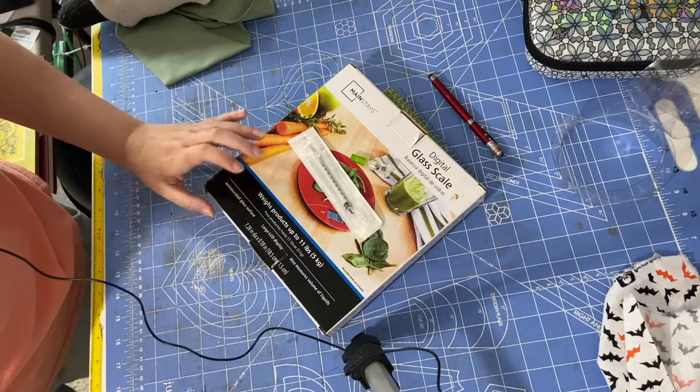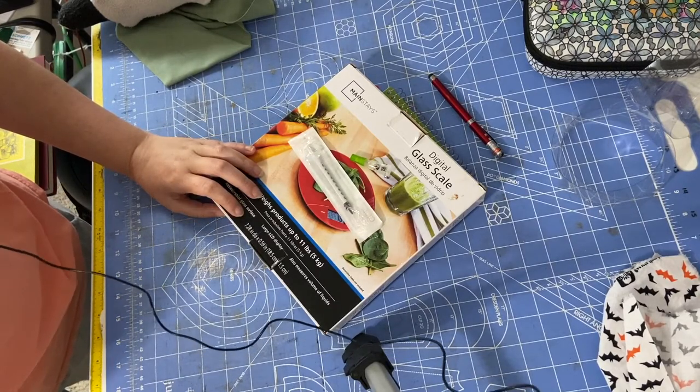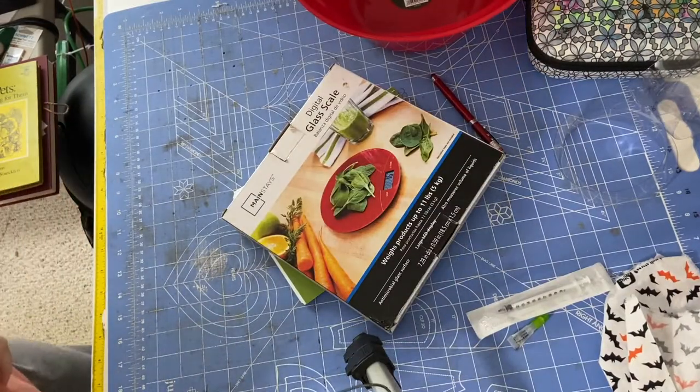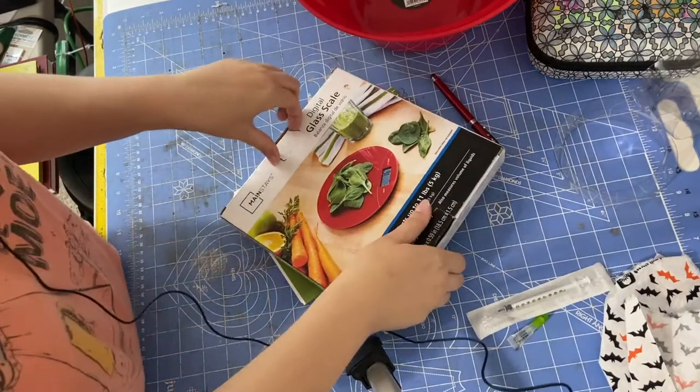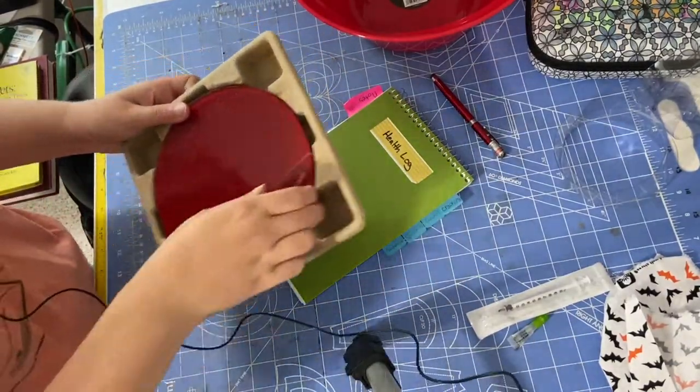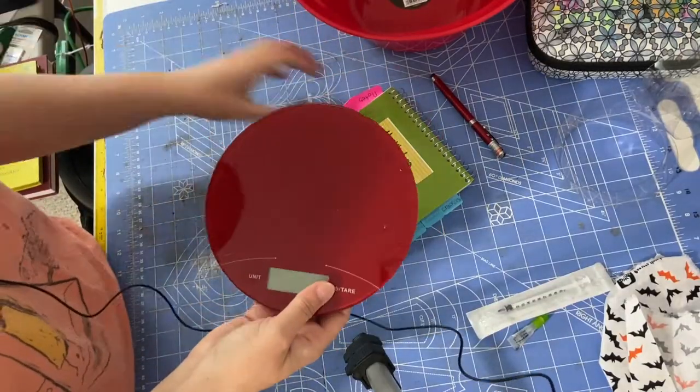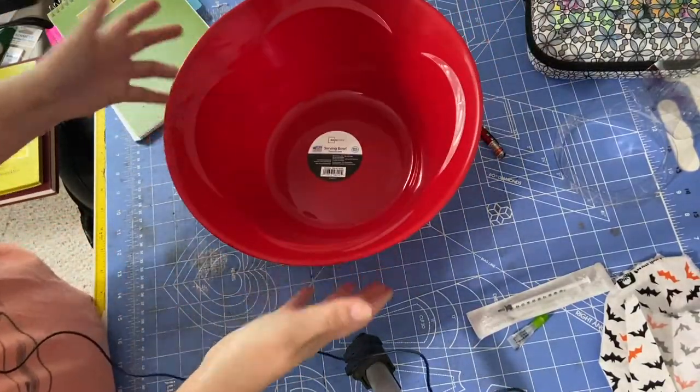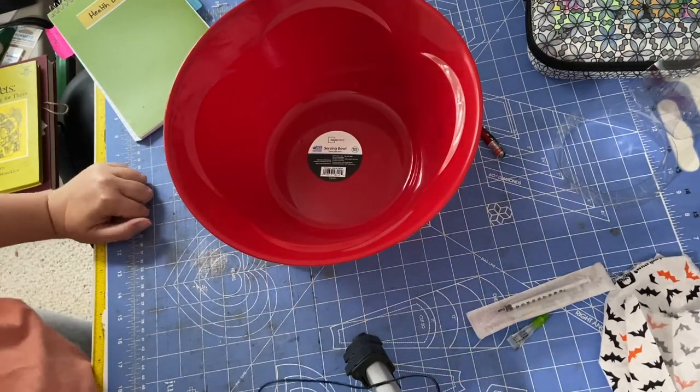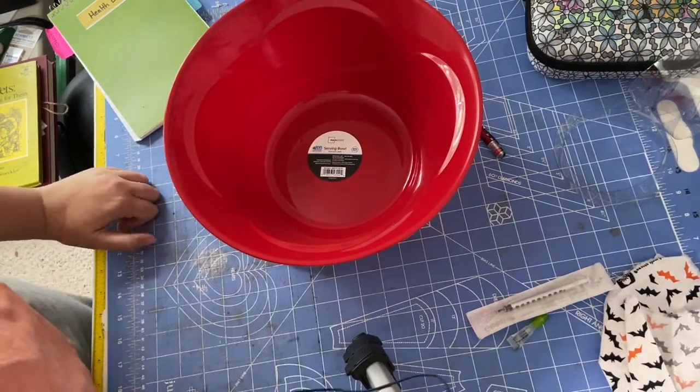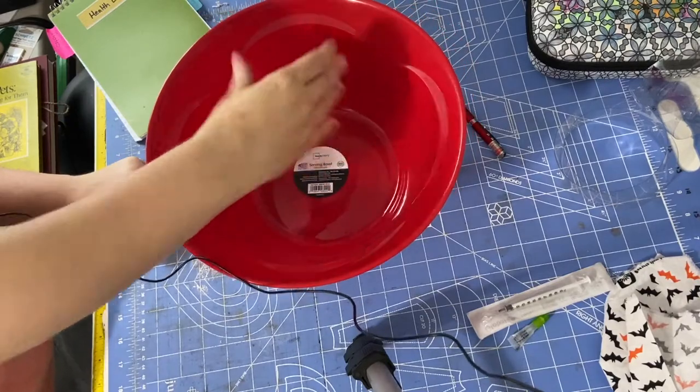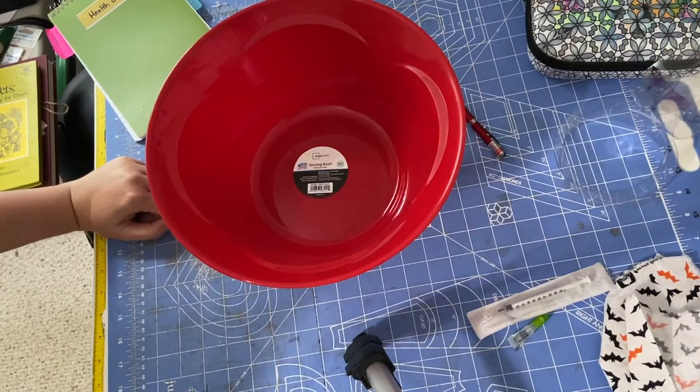Oh and I need something to set on the scale so that the rats can sit in it. Let me go grab that. I'm honestly not sure what's going to be the best to put on this scale so I grabbed a serving bowl that I have. I'm afraid that when I set this on here I won't be able to see it well. I can see it but you guys won't be able to see how much each rat weighs at all so that's kind of problematic.